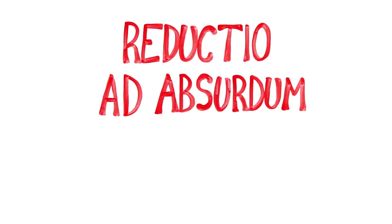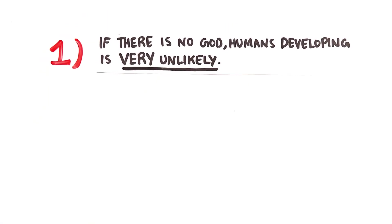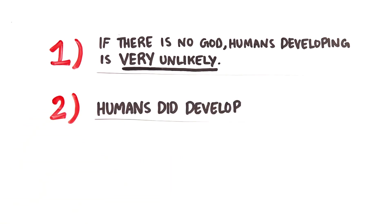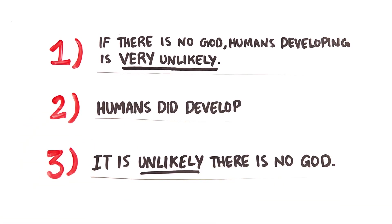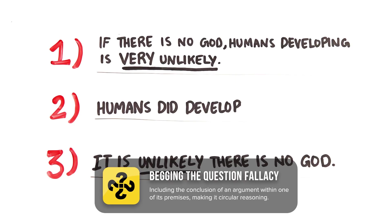This type of argument is called reductio ad absurdum, which simply means it attempts to disprove a statement by showing it inevitably leads to absurd or impractical conclusions. In this case, it suggests: 1) if there's no god, humans developing is very unlikely; 2) humans did develop; therefore 3) it is unlikely that there's no god. This is simply a syllogistic rendition of the argument placing specific emphasis on the existence of humans, and it's a pretty bad one — because its conclusion is within its first premise, meaning it's begging the question.